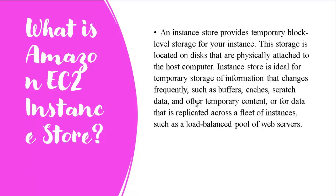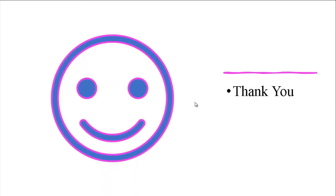Next, what is Amazon EC2 instance store? An Amazon EC2 instance store provides temporary block-level storage for your instances. This storage is located on disks that are physically attached to the host computer. Instance store is ideal for temporary storage of information that changes frequently, such as buffers, caches, scratch data, or for data replicated across a fleet of instances such as a load-balanced pool of web servers. This is all about AWS storage — described briefly. We will describe each storage elaborately. Some storage services are not free-tier eligible, so for those we will cover only the theoretical part, with no practical part in my next video.